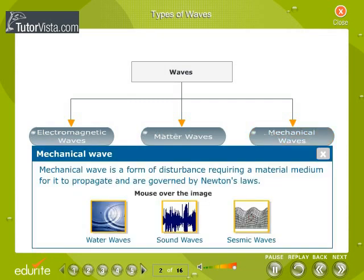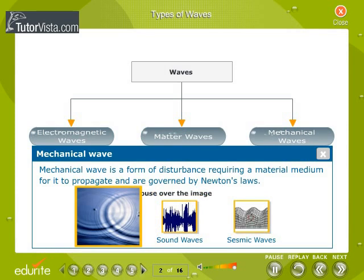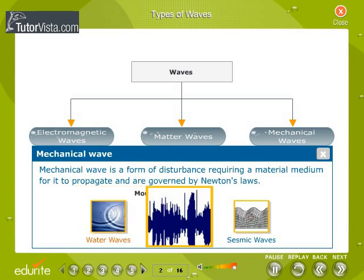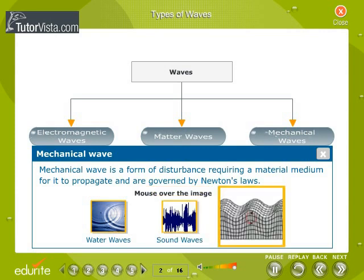Mechanical wave is a form of disturbance requiring a material medium for it to propagate and are governed by Newton's laws. Water waves, sound waves, seismic waves, etc. are examples of mechanical waves.